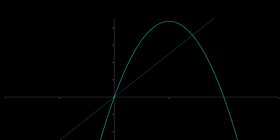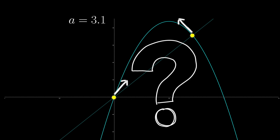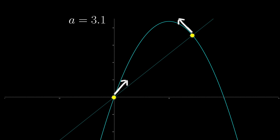However, when we get to values of A above 3, both fixed points have slopes greater than 45 degrees and are thus both repelling. So where do values of the logistic map end up in this case?